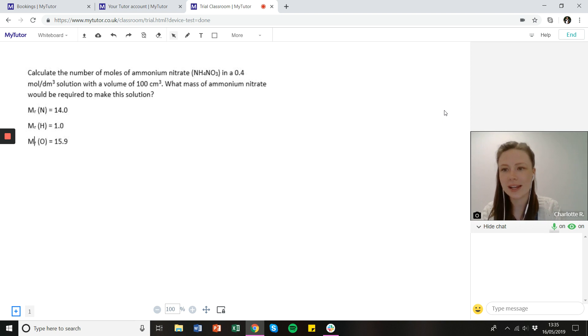So the first part is to calculate the number of moles of ammonium nitrate in a 0.4 mole per decimetre cubed solution with a volume of 100 centimetres cubed, and then the second part asks us what mass of ammonium nitrate would be required to make this solution.